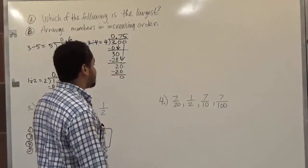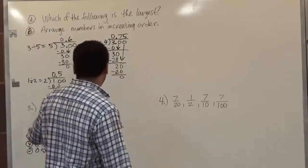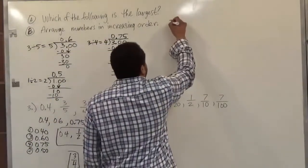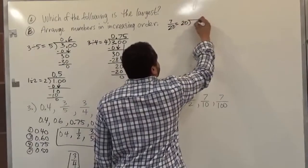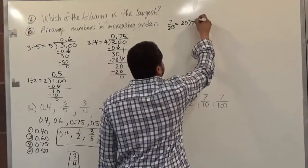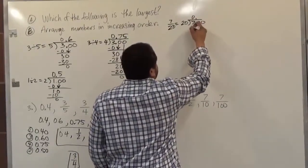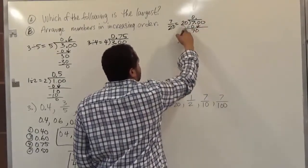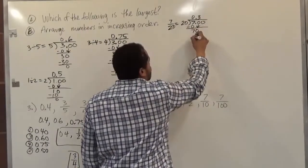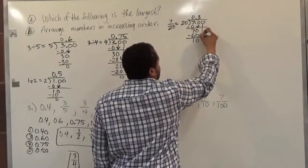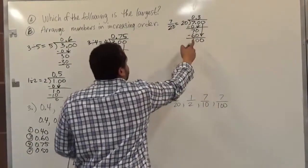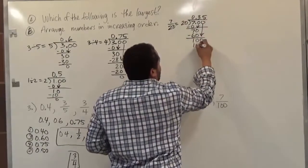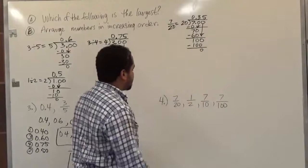The first fraction we have is 7 over 20. We divide: 20 goes into 7 — add two decimal places, bring up the decimal. 20 does not divide 7, so we bring down the next term to get 70. 20 divides 70 three times giving us 60, with a remainder of 10. Bring down the 0 to get 100, and 20 divides 100 exactly 5 times. So 7 over 20 becomes 0.35.